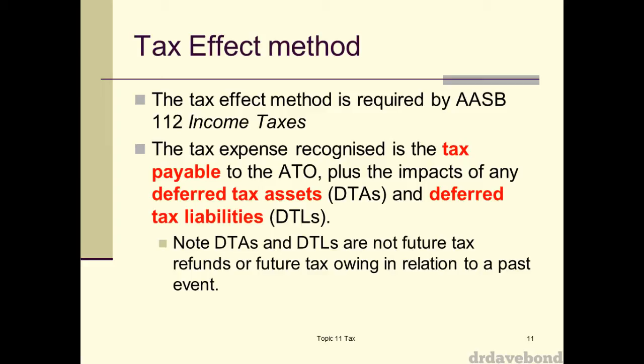Before we get into what deferred tax items are, it's probably best to cover what they're not. A deferred tax liability is not money that you owe the government in two, five, or ten years' time. What a DTL is saying is that there is going to be something that happens in the future — and if that happens, I'm going to have to pay more tax. A DTA is just the reverse: something happens in the future that means you'll pay less tax. A DTL does not mean you have a present obligation to the government — it's not like a short-term or long-term debt. A current tax liability means you actually owe the government; a deferred tax liability means something is going to happen that will cause you to pay more tax in the future.